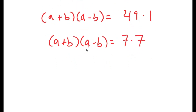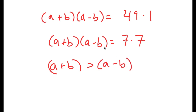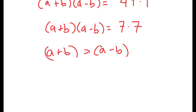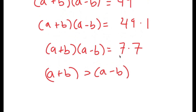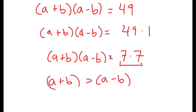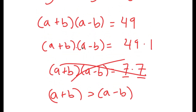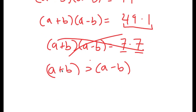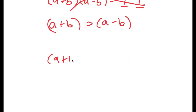Now, we obviously know that a plus b is going to be greater than a minus b. So keeping this in mind, this means that we can't rewrite a plus b times a minus b as 7 times 7, as 7 and 7 are equal. So this possibility is out of the way, and 49 times 1 is the only possibility here, meaning we go back to a plus b times a minus b is equal to 49 times 1.